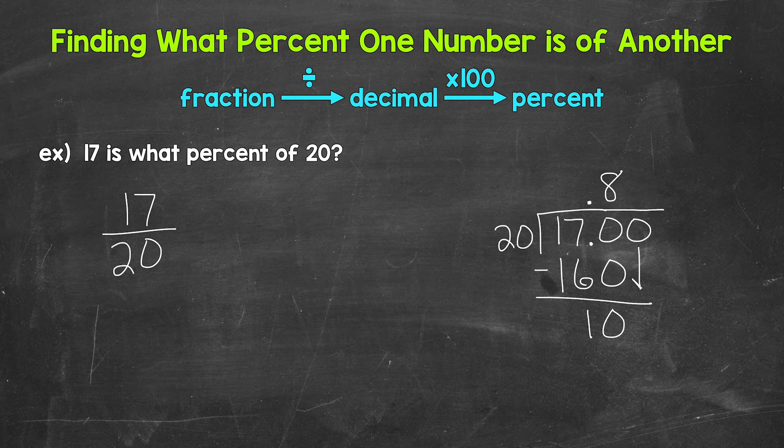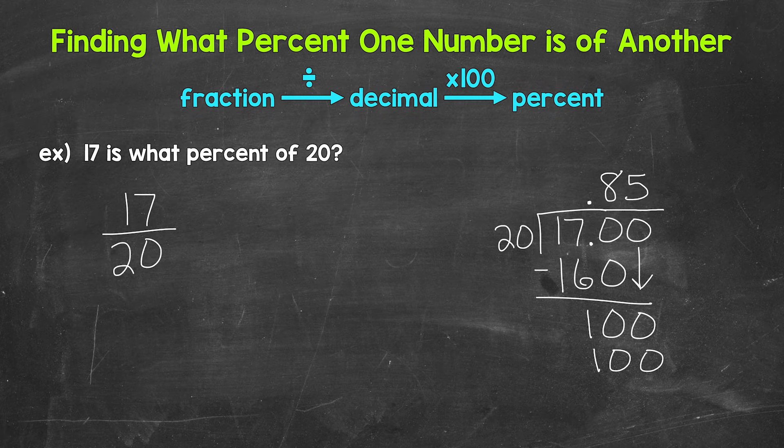We need another zero that we can bring down and continue on. Now we have 100 and we divide. We have 100 divided by 20. That equals 5. Now we multiply. 5 times 20 is 100.